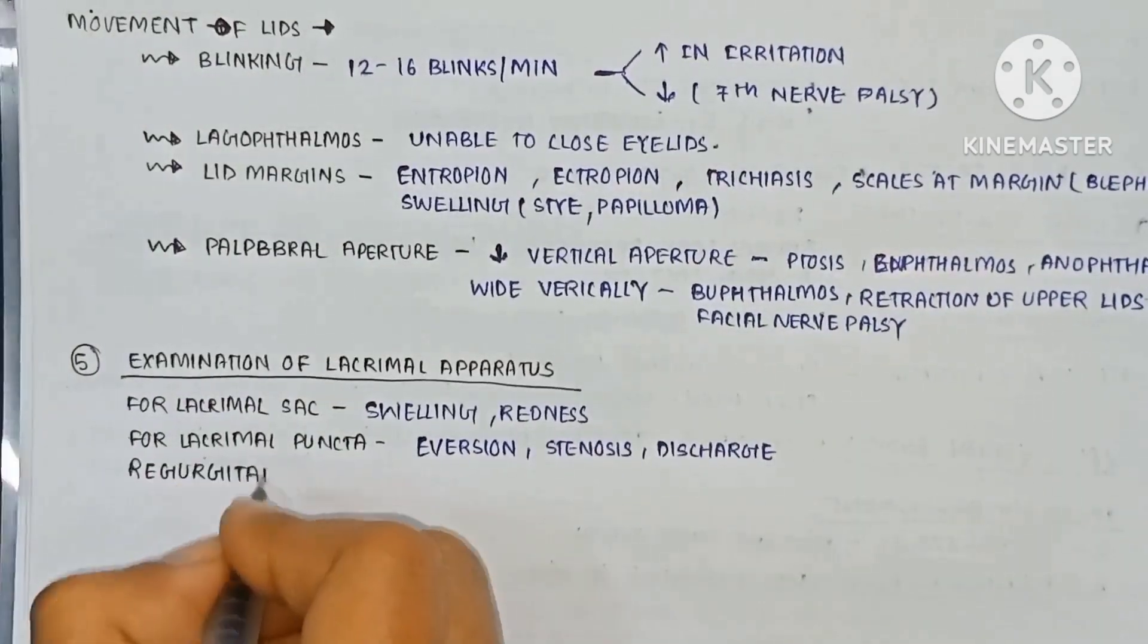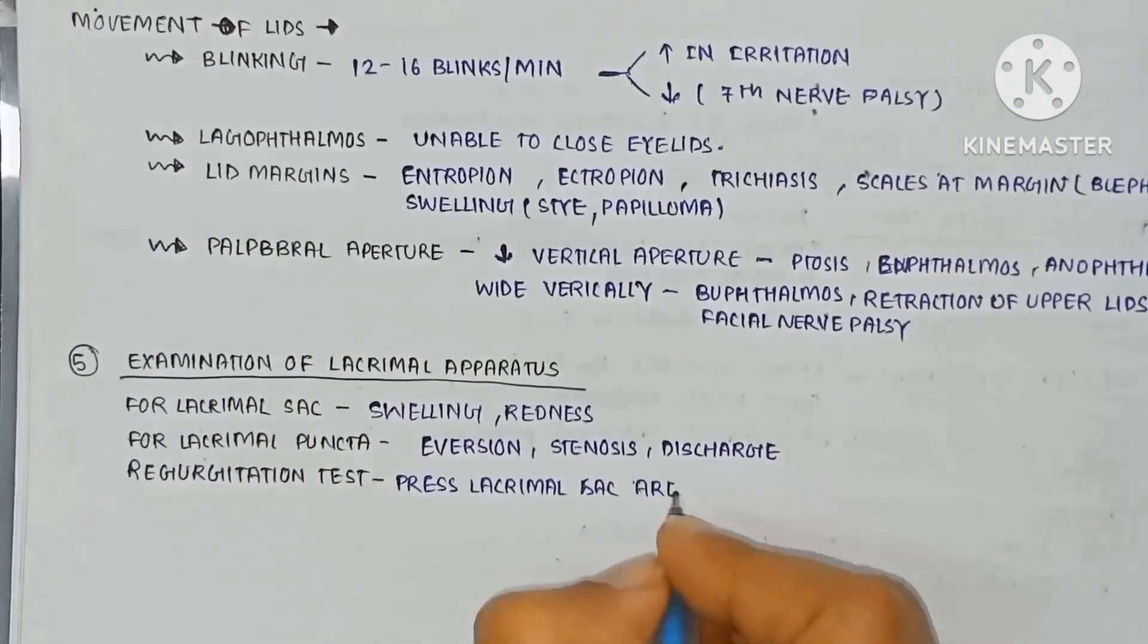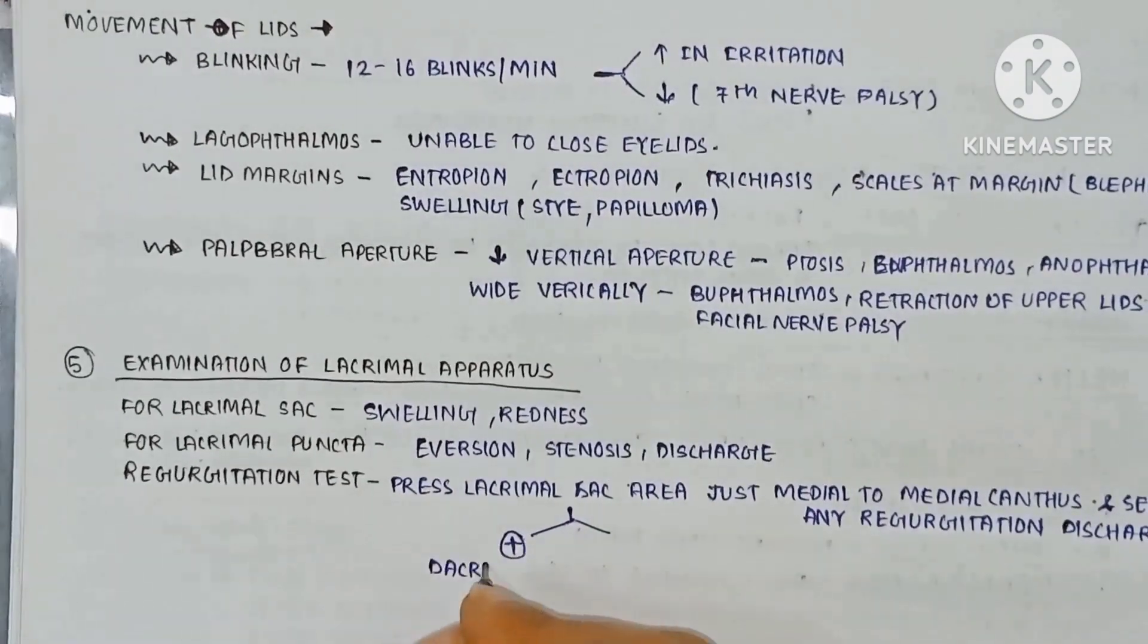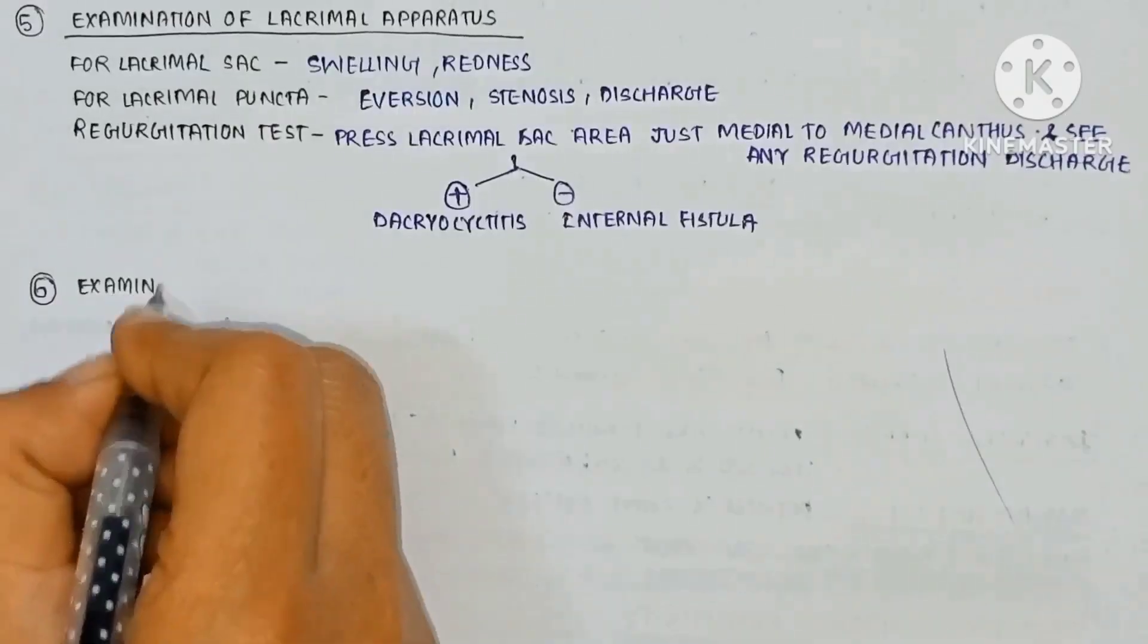The examination of the lacrimal apparatus by the four lacrimal tests. The swelling and redness. See for the lacrimal puncta: eversion, stenosis and discharge. Regurgitation test is pressing lacrimal sac area just medial to the medial canthus and see any regurgitation discharge. It is positive in dacryocystitis and negative in internal fistula.